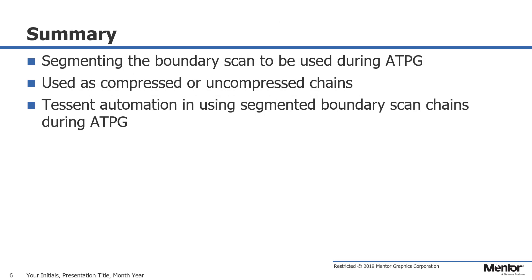To summarize, Tessent provides automation to take advantage of boundary scan cells during ATPG. This helps to improve coverage, especially when not enough pins are available to contact the pins on the device under test. The segmented boundary scan chains can be connected as compressed or uncompressed chains.